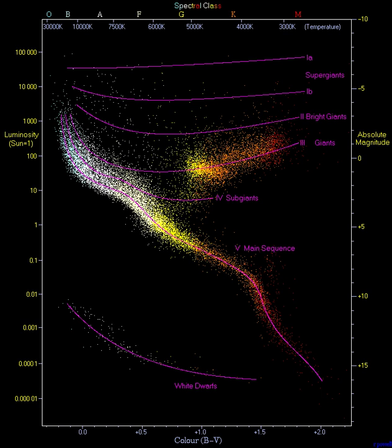The HR diagram can be used by scientists to roughly measure how far away a star cluster or galaxy is from Earth. This can be done by comparing the apparent magnitudes of the stars in the cluster to the absolute magnitudes of stars with known distances. The observed group is then shifted in the vertical direction until the two main sequences overlap.